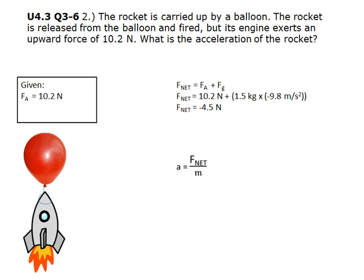Using this, we can find the acceleration. Acceleration A equals F net, average net force, divided by M, mass. F net is negative 4.5 newtons and the mass of the rocket is 1.50 kilograms. The acceleration of the rocket is negative 3 meters per second squared.